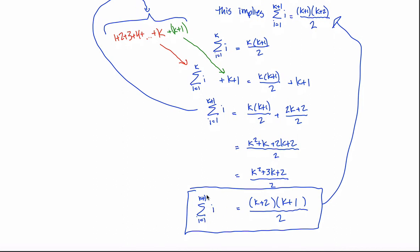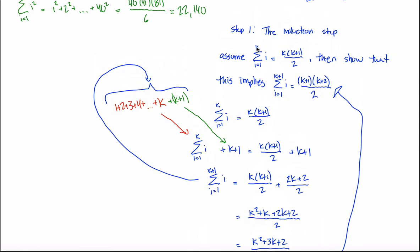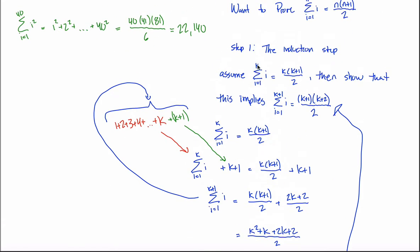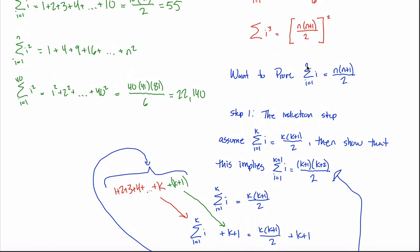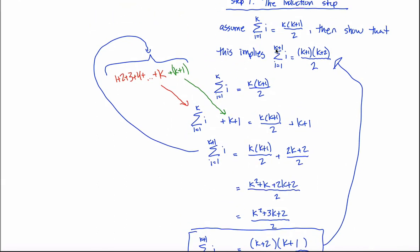Now, this proves that the formula is true in the k plus one case only if it's true in the k case — but I still don't know it's true in the k case; I just assumed that. Nobody has shown this is true for some arbitrary k. But if it is true for some arbitrary k, then it's true for k plus one. If the formula is true when n equals a million, then it must also be true when n equals a million and one. That completes step one — the induction step.